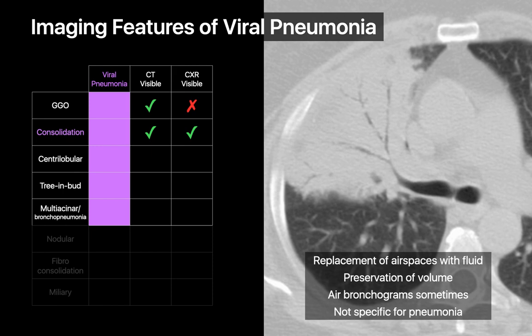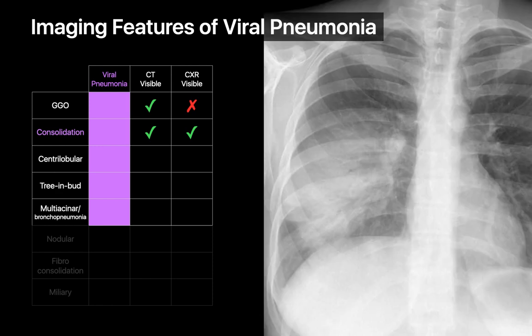Viral pneumonias can result in consolidation. In consolidation, air within the air spaces is replaced by fluid, resulting in lung parenchyma that is densely opacified with preserved volume, unlike atelectasis or fibrosis. With consolidation, background pulmonary vessels will not be discernible on non-contrast imaging. Air bronchograms may sometimes be visible, but they are not a specific sign for consolidation or pneumonia, as they can also be seen in other conditions including atelectasis. Consolidation is visible on both chest CT and chest x-ray.